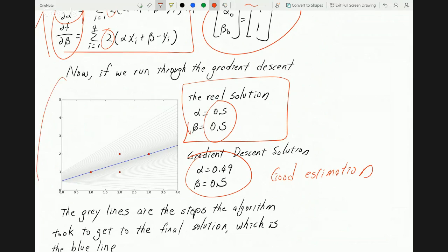You can see from this graph here that all the gray lines, they're little by little inching towards the final solution which is the blue line. The blue line here is the actual solution and look at how the blue line fits the red dots really really well.